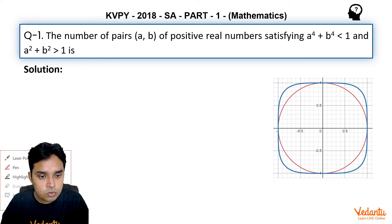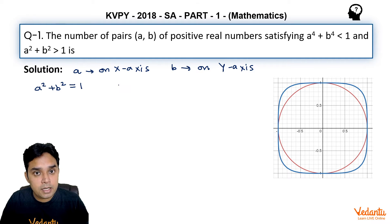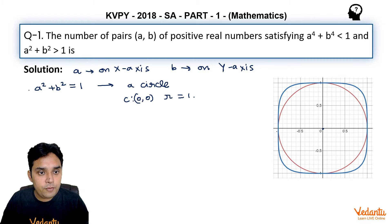To solve this question, let us assume that a is lying on x-axis and b is lying on y-axis. Then a²+b²=1 will be representing a circle whose center is at origin and radius is 1. In fact, a²+b² is actually the square of distance of (a,b) from (0,0).